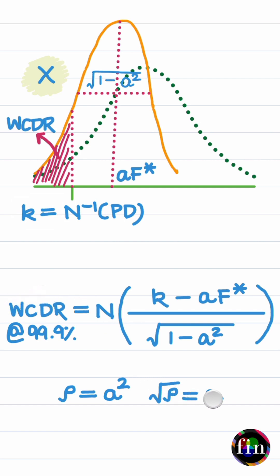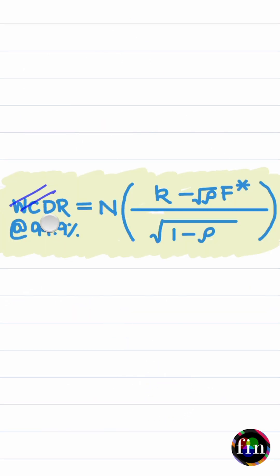As a last step, substitute A to be equal to the square root of the pairwise correlation and you get the final Vasicek formula.